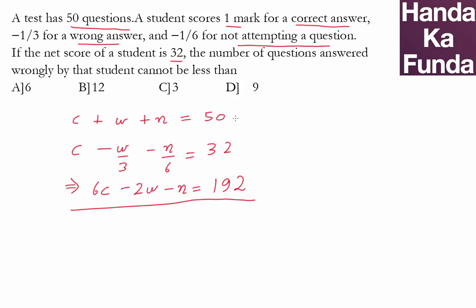If you add these two equations, what will you get? c + 6c is 7c, w - 2w will be -w, the n and -n will cancel, and here you get 242. So 7c - w = 242. This is the basic information given to us.